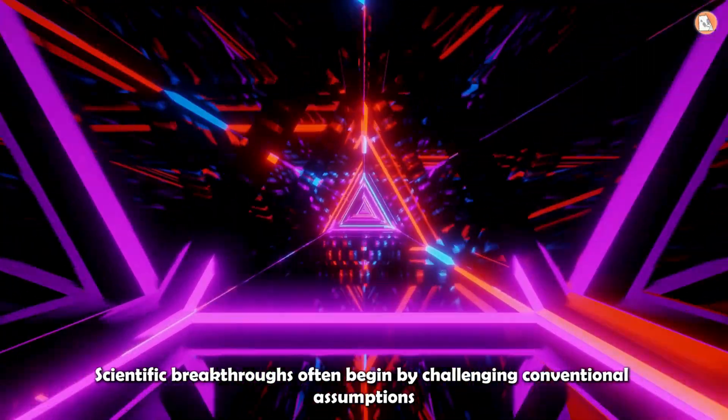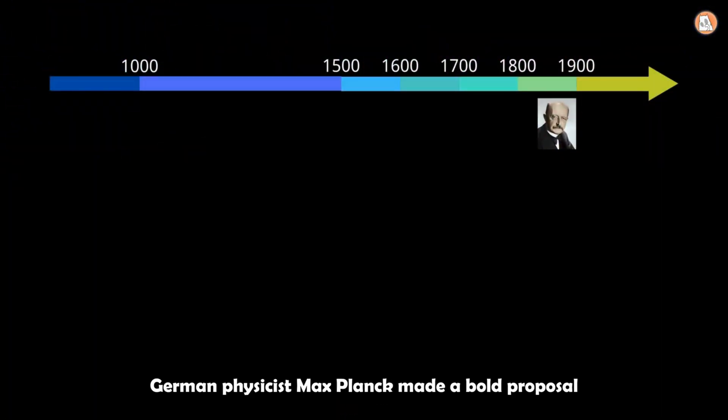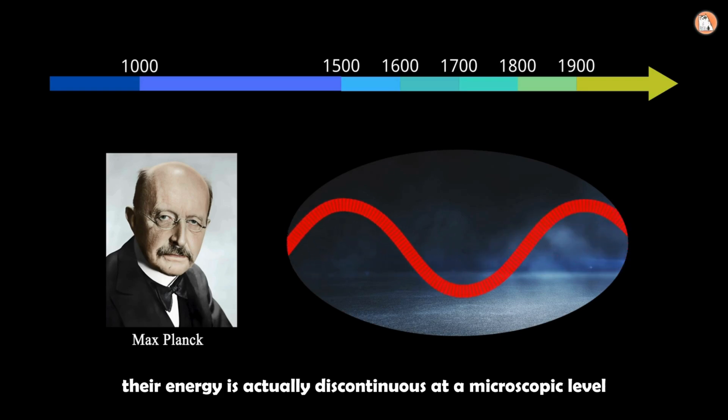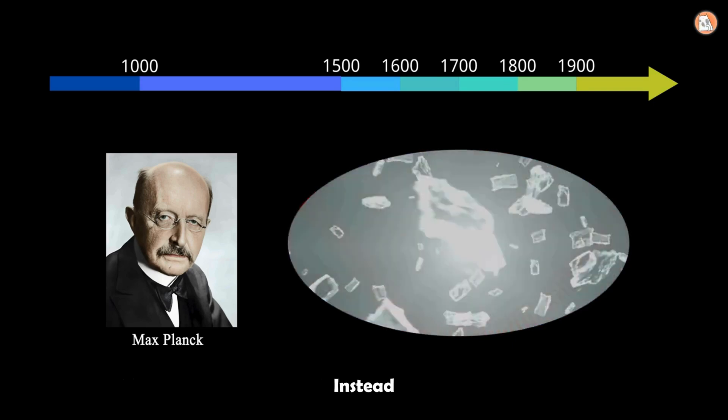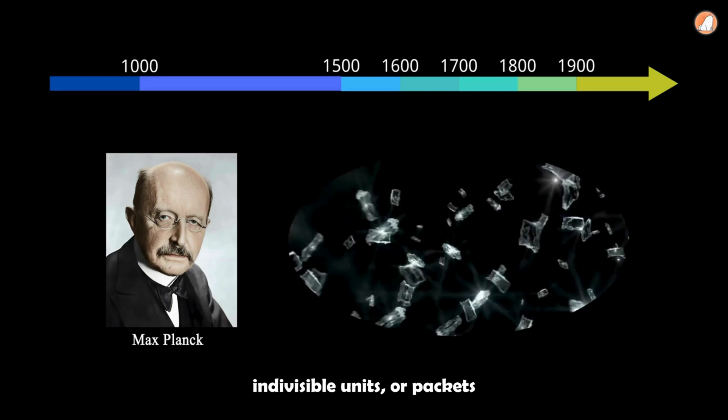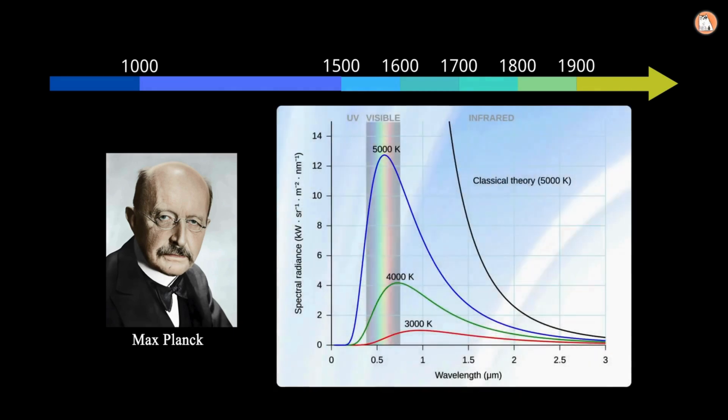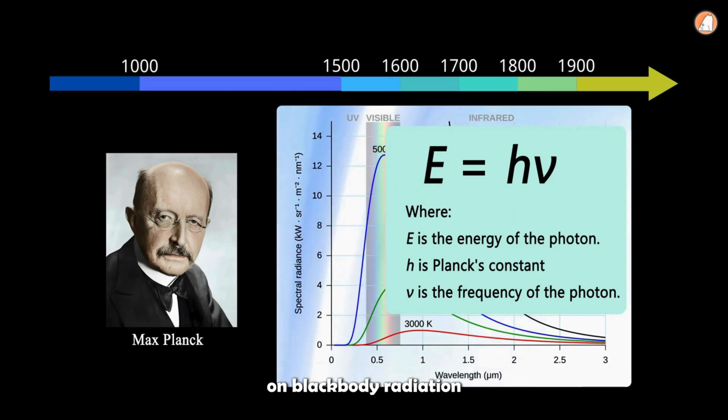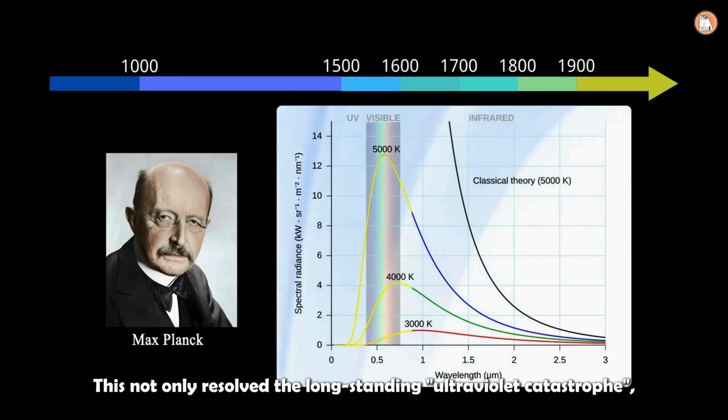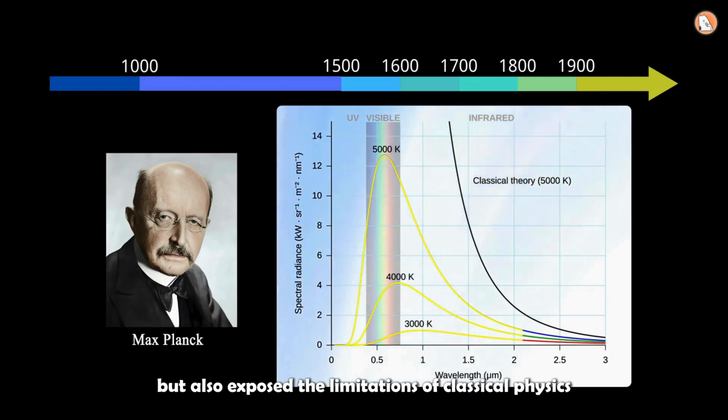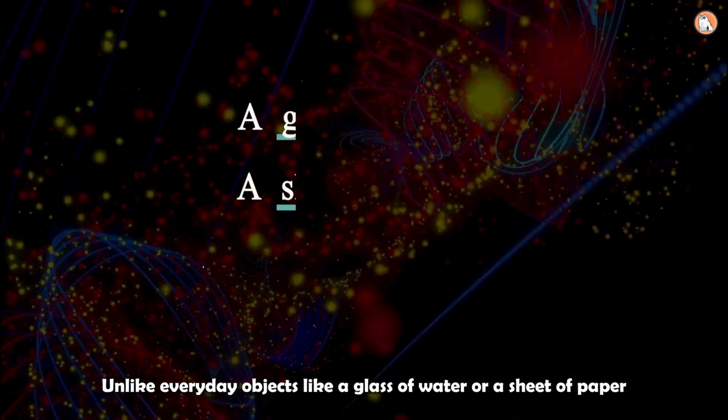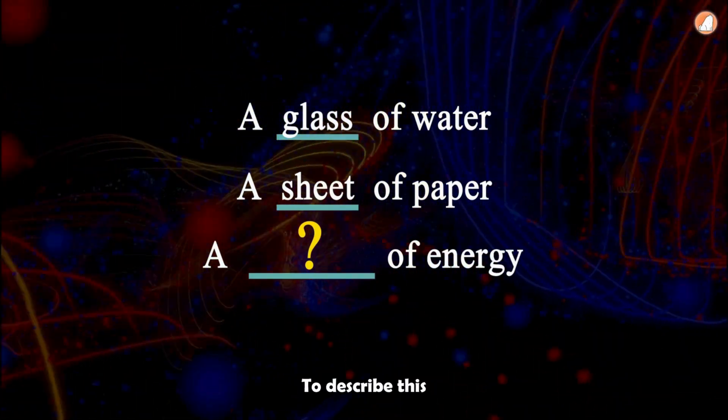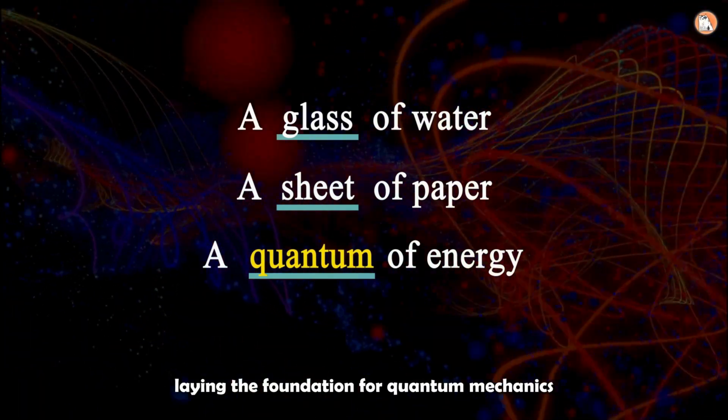Scientific breakthroughs often begin by challenging conventional assumptions. In 1900, German physicist Max Planck made a bold proposal. While electromagnetic waves appear continuous on a macroscopic scale, their energy is actually discontinuous at a microscopic level. Instead, it exists in the smallest indivisible units, or packets. This was a revolutionary departure from the classical worldview. Building on this groundbreaking idea, Planck formulated an energy equation that successfully matched the experimental data on blackbody radiation. This not only resolved the long-standing ultraviolet catastrophe, but also exposed the limitations of classical physics in explaining microscopic phenomena. Unlike everyday objects like a glass of water or a sheet of paper, the concept of discrete energy units was entirely new. To describe this, Planck introduced the term quantum, laying the foundation for quantum mechanics.